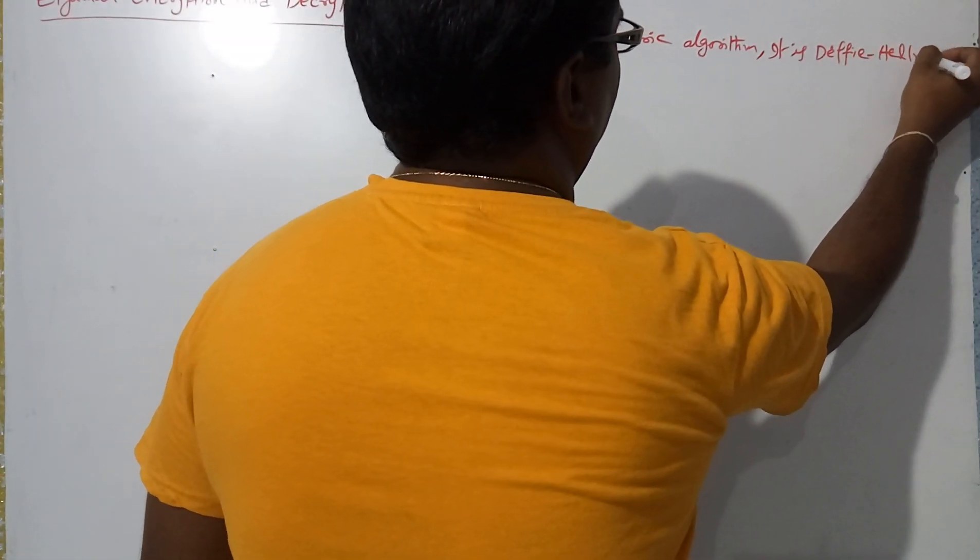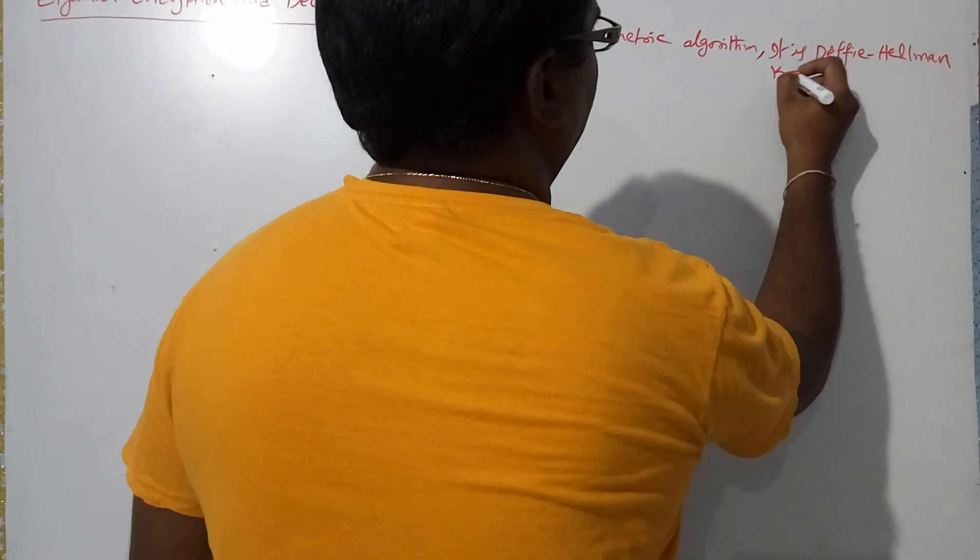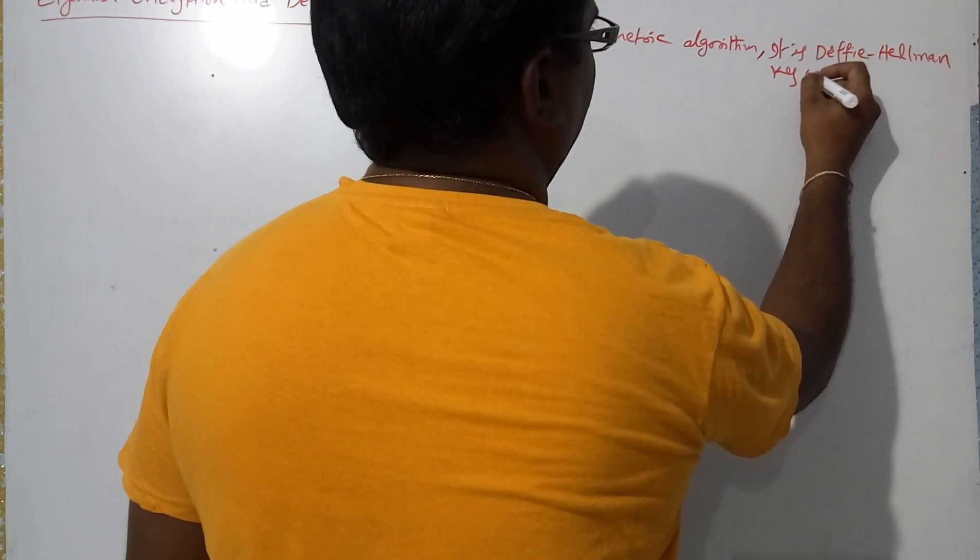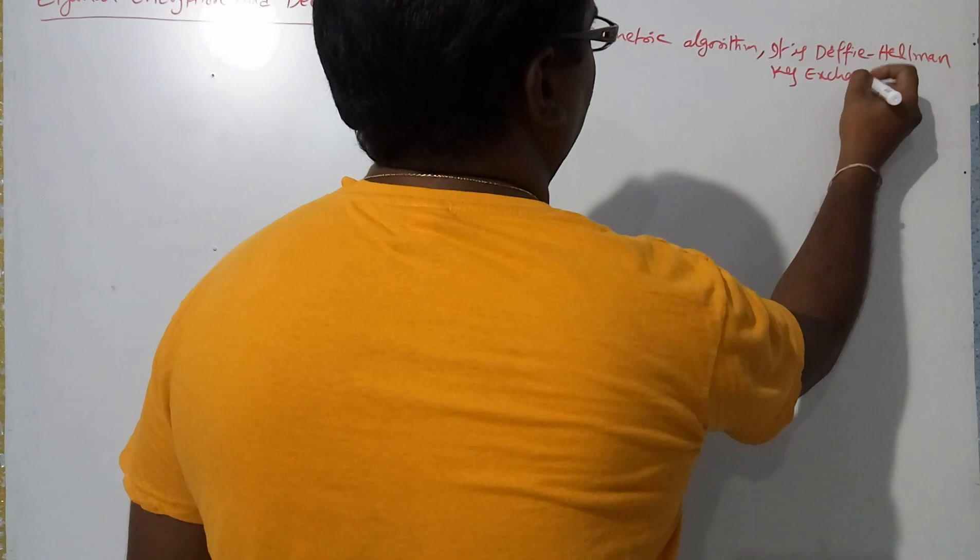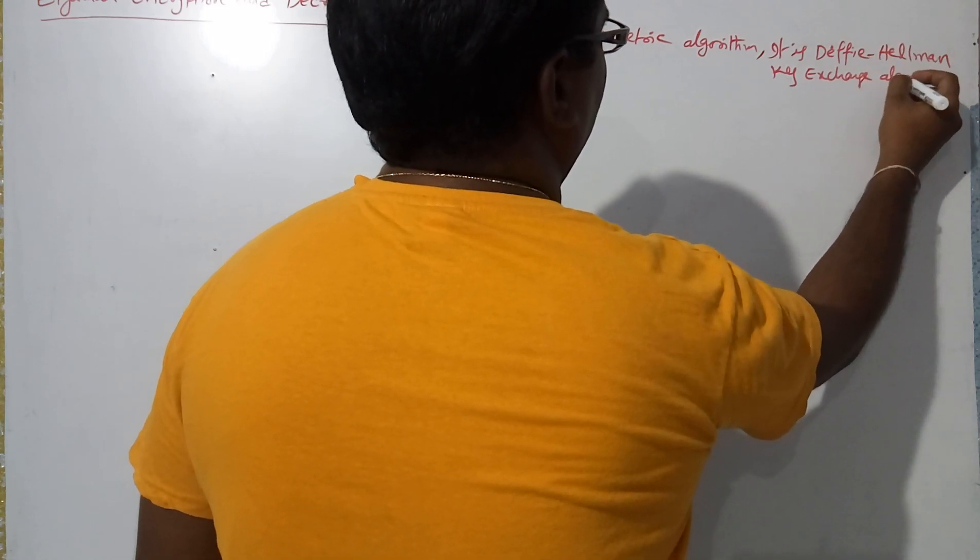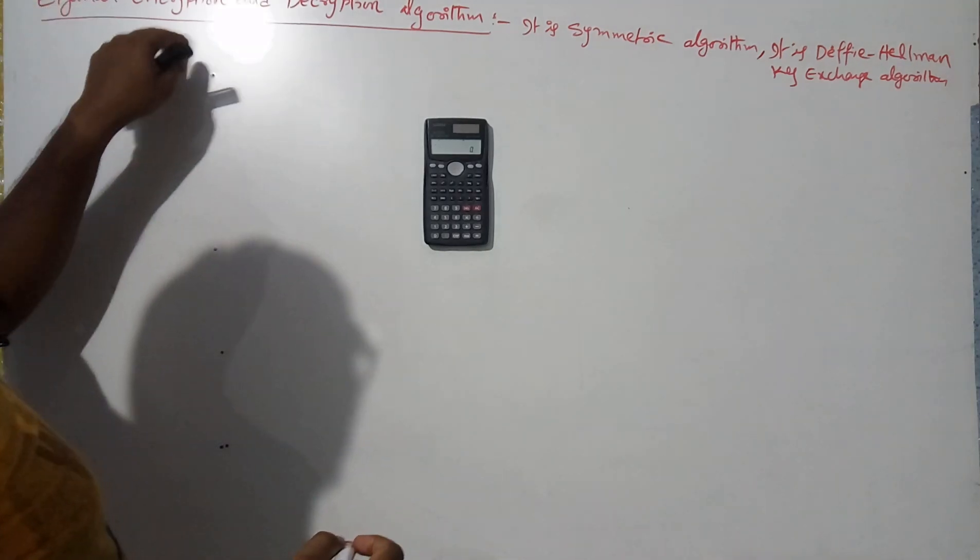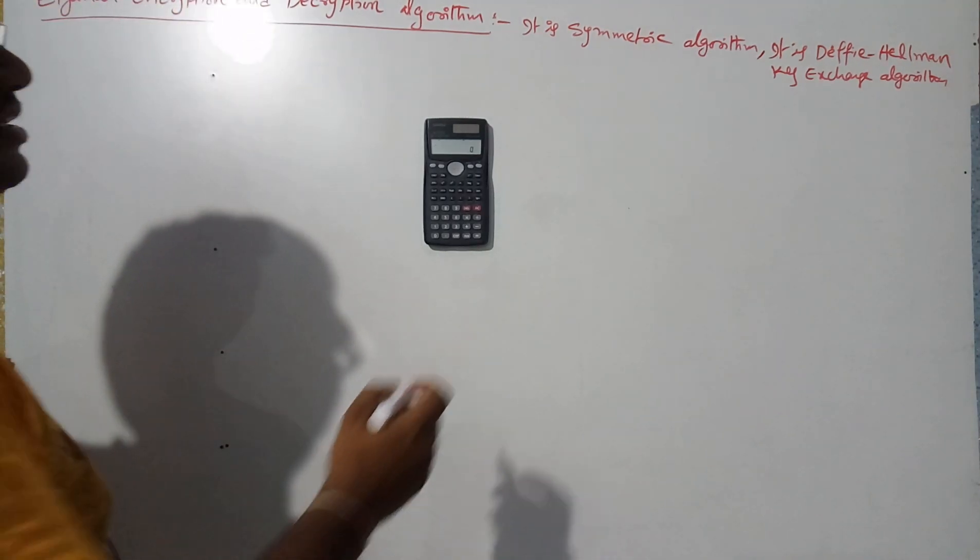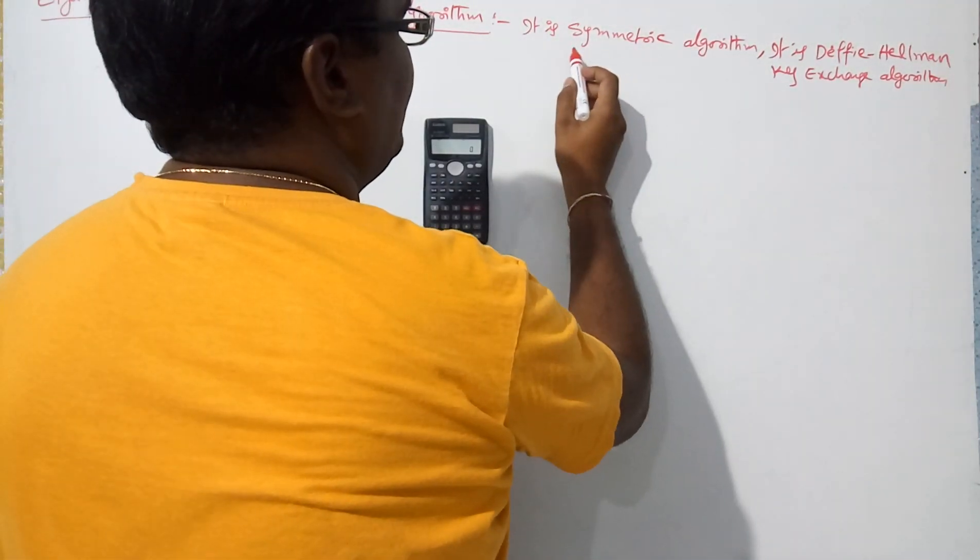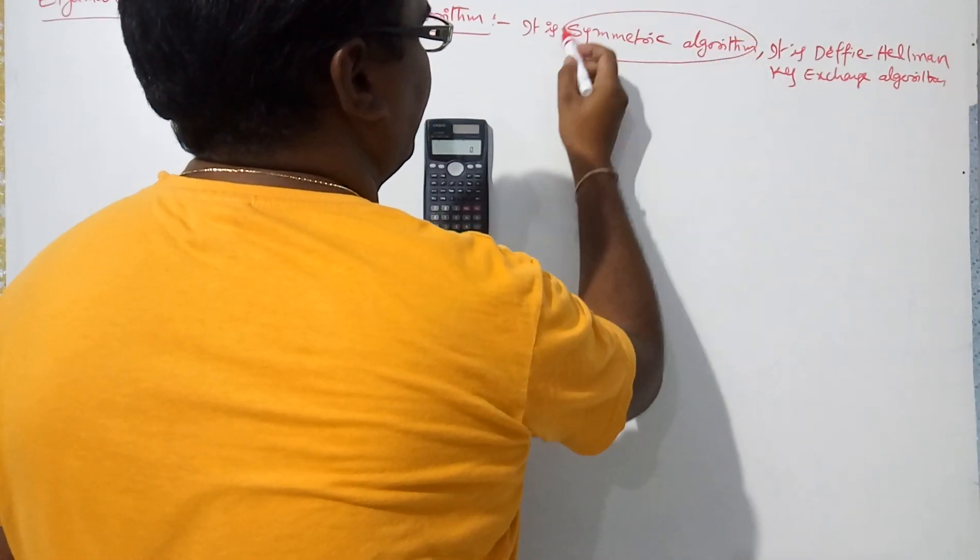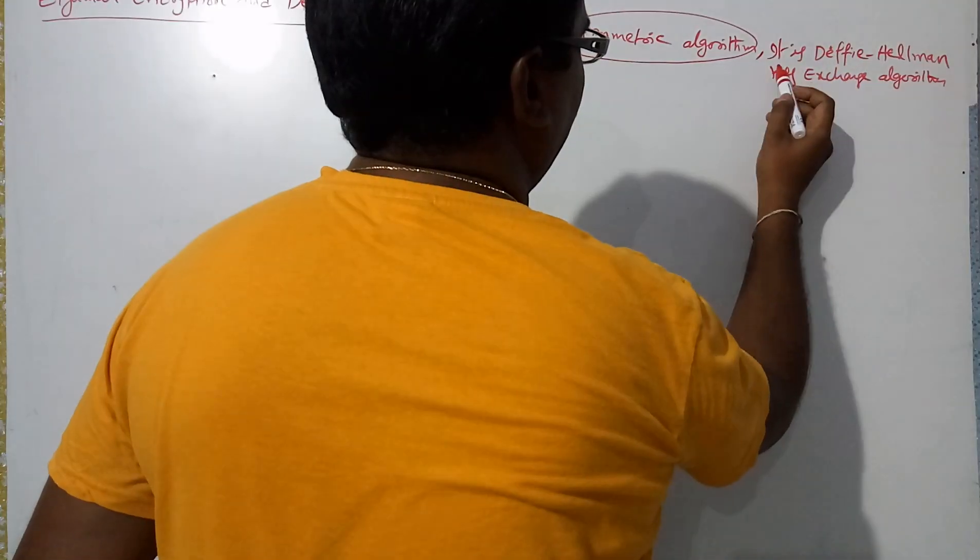This is also related to Diffie-Hellman key exchange. ElGamal encryption decryption algorithm is a combination of the symmetric and also Diffie-Hellman key exchange principles.